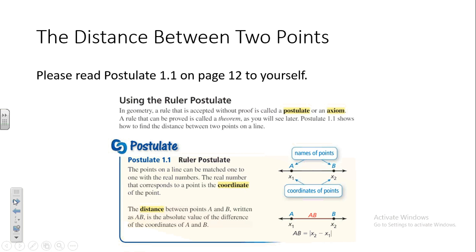Points on a line can be matched one-to-one with real numbers. The real number that corresponds to the point is the coordinate of the point, and the distance between points A and B, written as AB, is the absolute value of the difference of the coordinates of A and B.